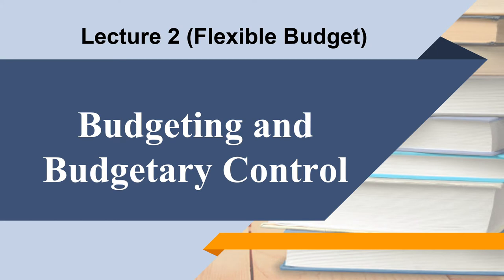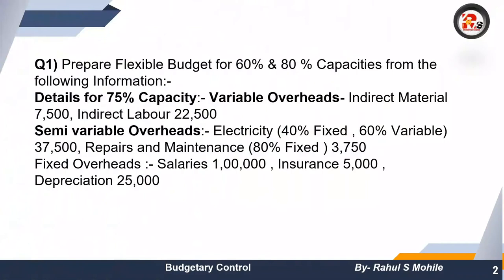The union budget is just a prediction — whatever income and revenue the government is earning forms the basis of government expenditures. Similarly, for a company, if the company is working at 50% capacity and increases that capacity, the company's expenditures will change — that is the flexible budget. Let us start with the first question: prepare a flexible budget for 60% and 80% capacity.